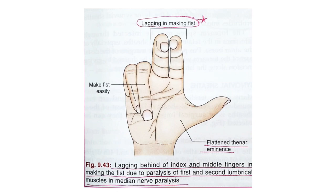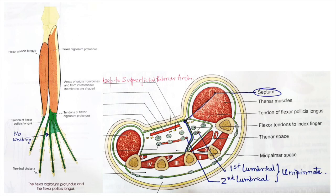The reason the middle finger is partially flexed is the webbed aponeurosis between the long flexor tendons. This webbing is present between the tendons of the middle, ring, and little fingers, but is absent between the long tendons of the middle and index finger because a vertical septum passes between those two tendons, dividing the palmar spaces into the thenar and mid-palmar space. The second lumbrical is unipennate, unlike in the sole, which is why this vertical septum reaches down to attach on the third metacarpal.